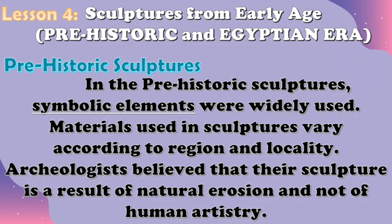Let's first start with Lesson 4 — Sculptures from Early Age, the Prehistoric and Egyptian Era. In the prehistoric sculptures, symbolic elements were widely used. Materials used in sculptures vary according to region and locality. Archaeologists believe that their sculpture is a result of natural erosion and not of human artistry.